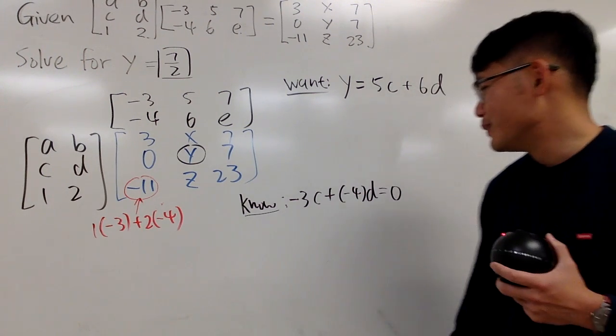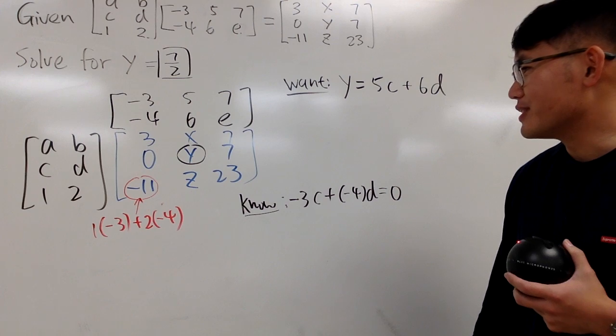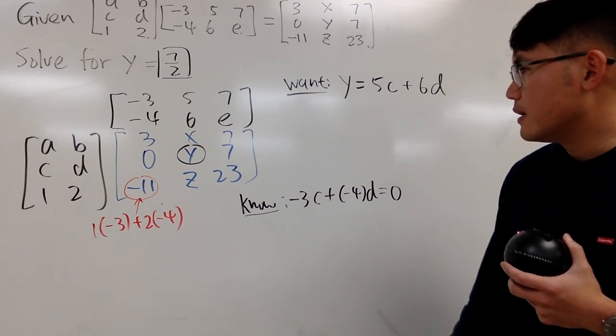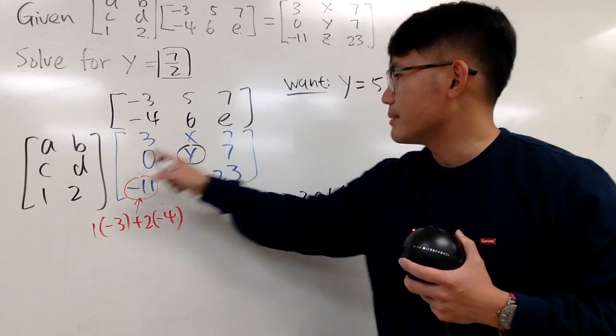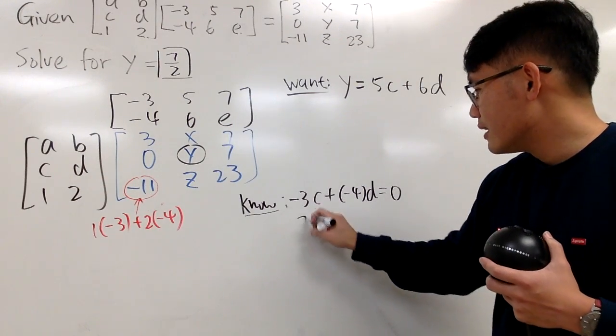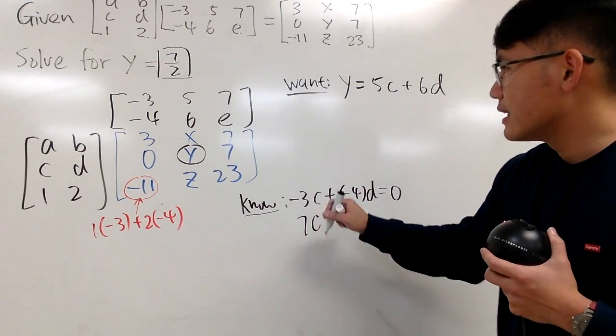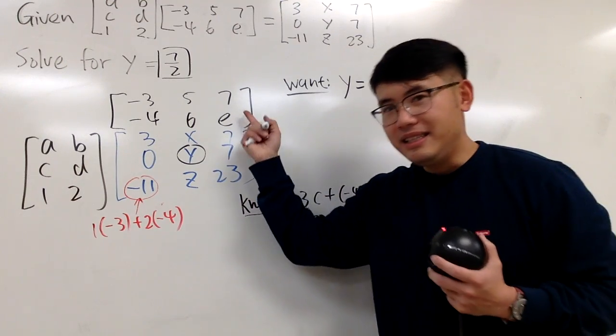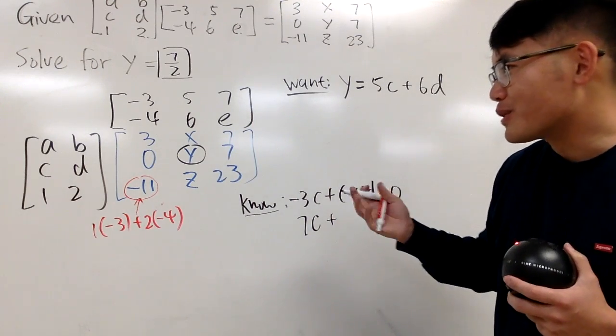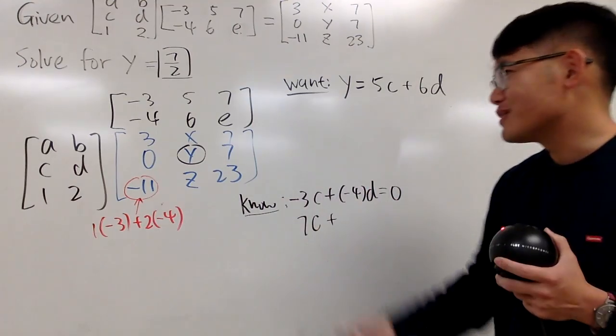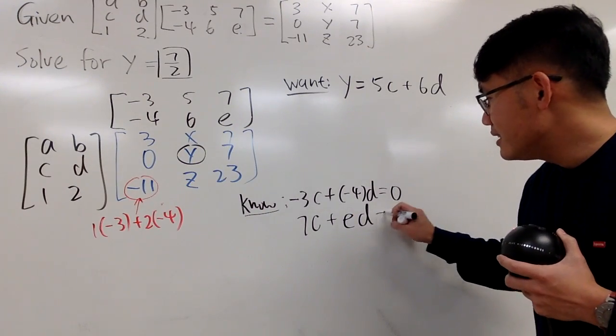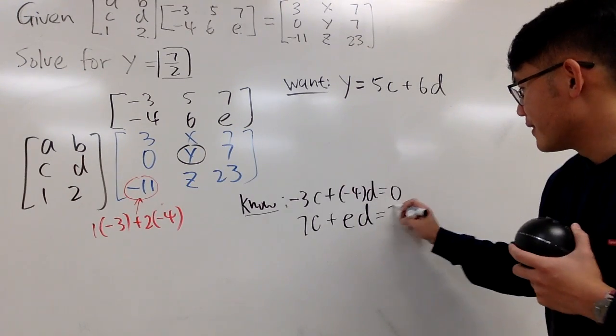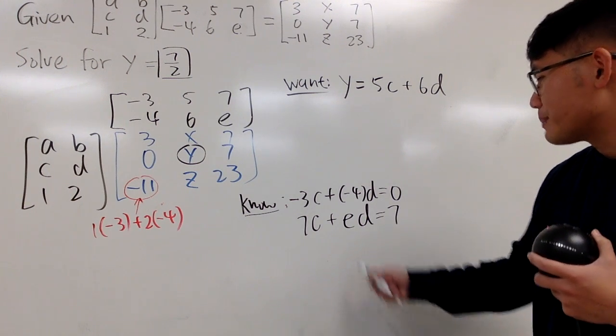And then, we still need more equations. Let's see. Why don't I use this 7? This 7 is from this times this, plus this times that. So let me write it down. 7 times c, plus, yeah, e. Oh my god. Whoever created this question, I think, I don't know what's wrong with the e that he wants to use. But anyway, e times d, e times d, this will give us this 7 here. So we have the system of equations, but I don't know what e is.